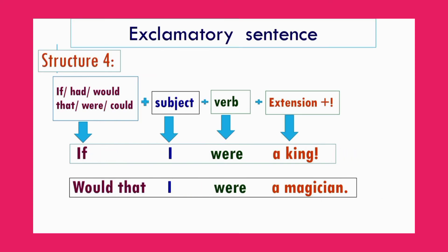Structure 4: If / had / would that / were / could + subject + verb + extension + exclamation sign. Such as: 'If I were a king!' 'Would that I were a magician!' At the end of the sentence, we use an exclamation sign.